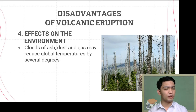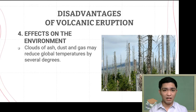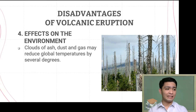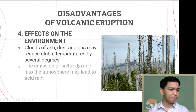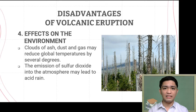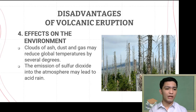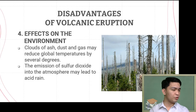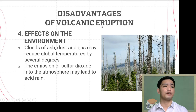The emission of sulfur dioxide, one of those harmful gases, may lead to acid rain. Acid rain is very harmful because it negatively affects human health and may result in respiratory diseases. It also harms forests, bodies of water, buildings, and infrastructure, as you can see in the pictures on screen.